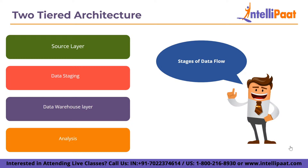The second stage is data staging, which entails extracting data from the source, cleaning it to remove discrepancies, filling in gaps, and integrating it to combine data from several sources into a single standard schema. ETL tools extract, transform, clean, validate, filter, and load source data into the data warehouse. The third stage is the data warehouse layer — a logically centralized store for information, which can also serve as a source for developing data marts for particular company departments.